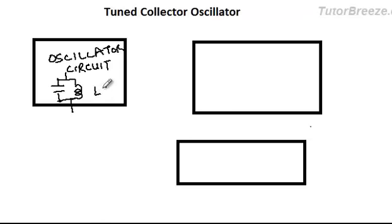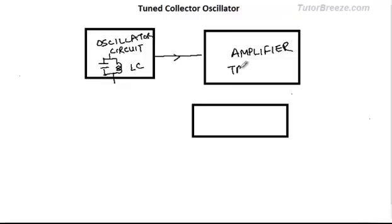So the LC circuit is going to produce the sinusoidal oscillations. Next we have an amplifier. The amplifier will amplify the output of this tank circuit. In our case the transistor is going to play this role. So we have a transistor which acts as the amplifier.